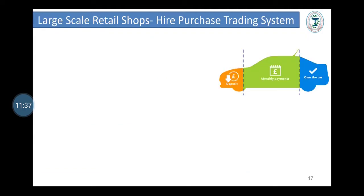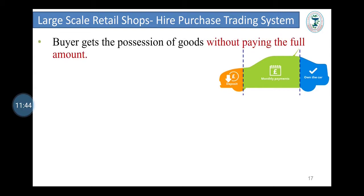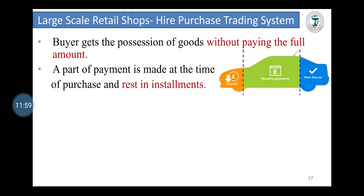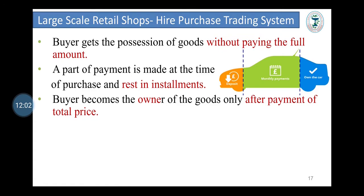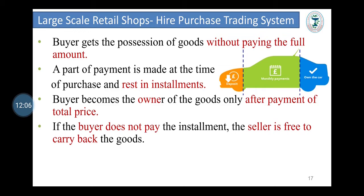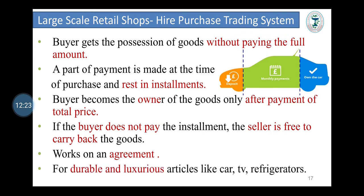The last type is the hire purchase trading system, that is buying goods on installment. In this, the purchaser gets possession of goods without paying the full amount to the seller. A part of payment is made at the time of purchase and the rest is paid in installments. The buyer becomes owner of goods only after payment of the total price. If the purchaser does not pay an installment, the seller is free to take back the goods. It is usually used for durable and luxurious articles like cars, TVs, fridges, etc.